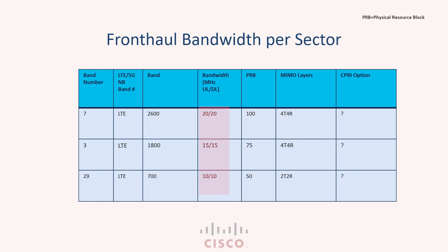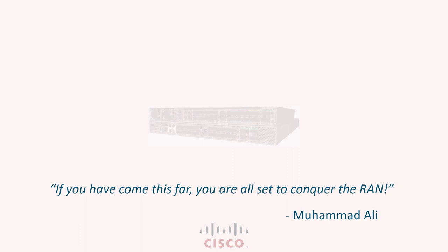The channel bandwidths are the same for both uplink and downlink, which is generally the case. The final data point that will help us derive the fronthaul CPRI bandwidth is the antenna configuration, or the MIMO layers — here you can see it is a mix of 2T2R and 4T4R. In the next video, we'll do a deep dive into LTE resources allocated at a cell site and understand them with respect to the time and frequency domain. Thanks for watching — see you in the next one.